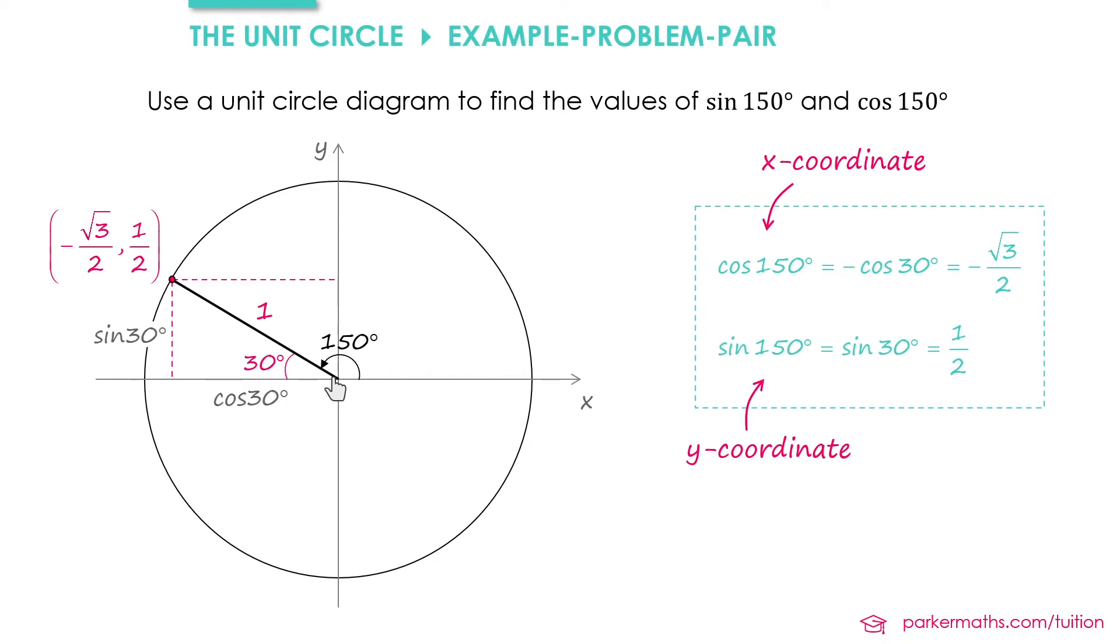So whenever you are working with one of these problems, because you can do this in any of the quadrants of the unit circle, make sure that the angle you're working with within your right angle triangle is measured from the x direction and not from the y direction. Now technically you can do it in the other direction and you're welcome to experiment, but it does make it far more likely in these initial stages that you would make a mistake by doing so.